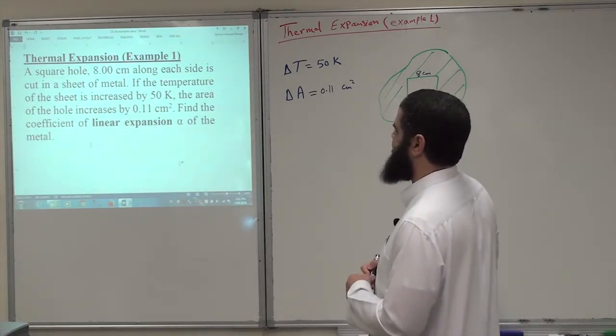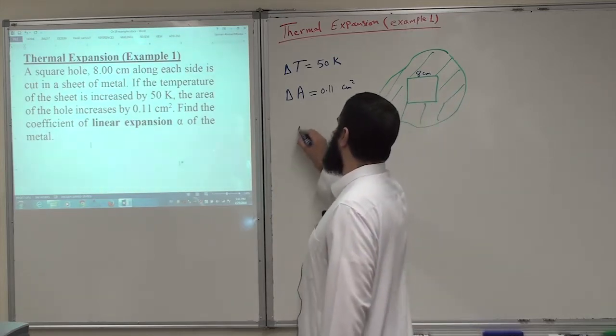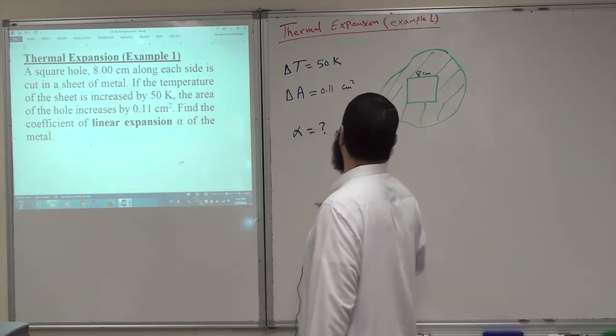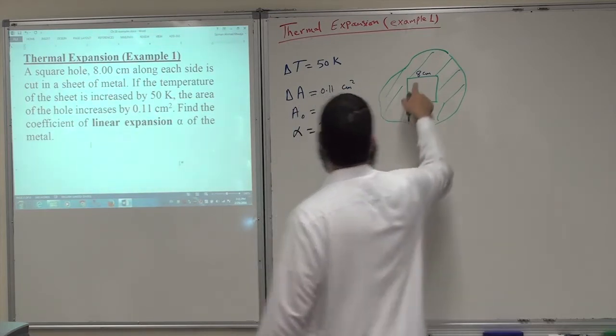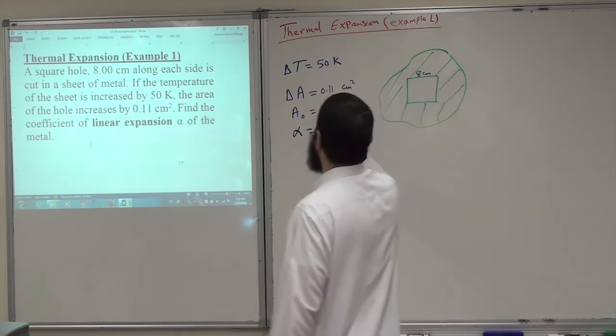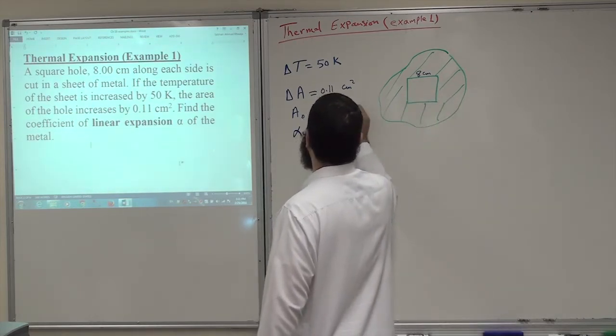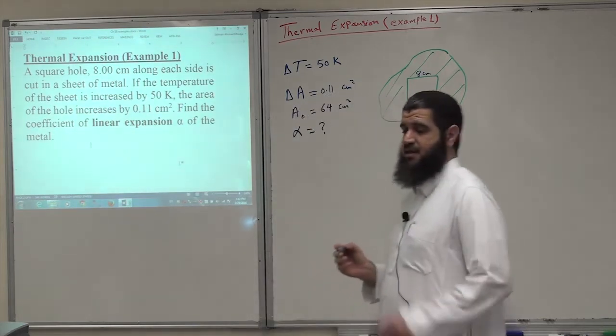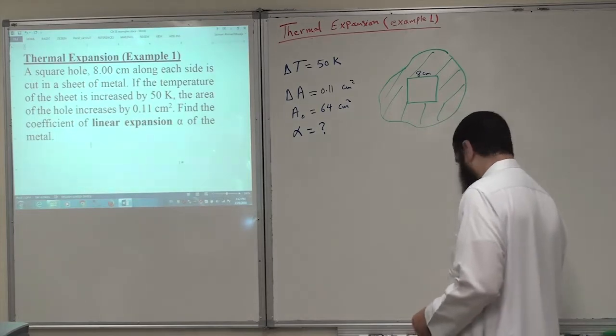Find the coefficient of linear expansion alpha of this metal. So he's asking for alpha equals how much, knowing that the area A0 of the hole was 8 by 8, and this will be 64 centimeter squared. This is the initial area of the hole. To answer this question.